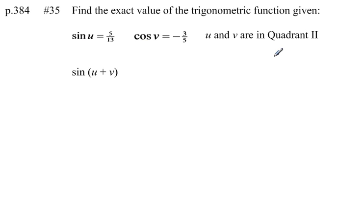They're both in quadrant 2, so up here I'm going to draw a triangle in quadrant 2, and I'm going to call this angle here u, which means this one in here is u prime. Either way, the sine of this angle is 5 over 13. Well, from SOHCAHTOA, I know that sine is opposite over hypotenuse.